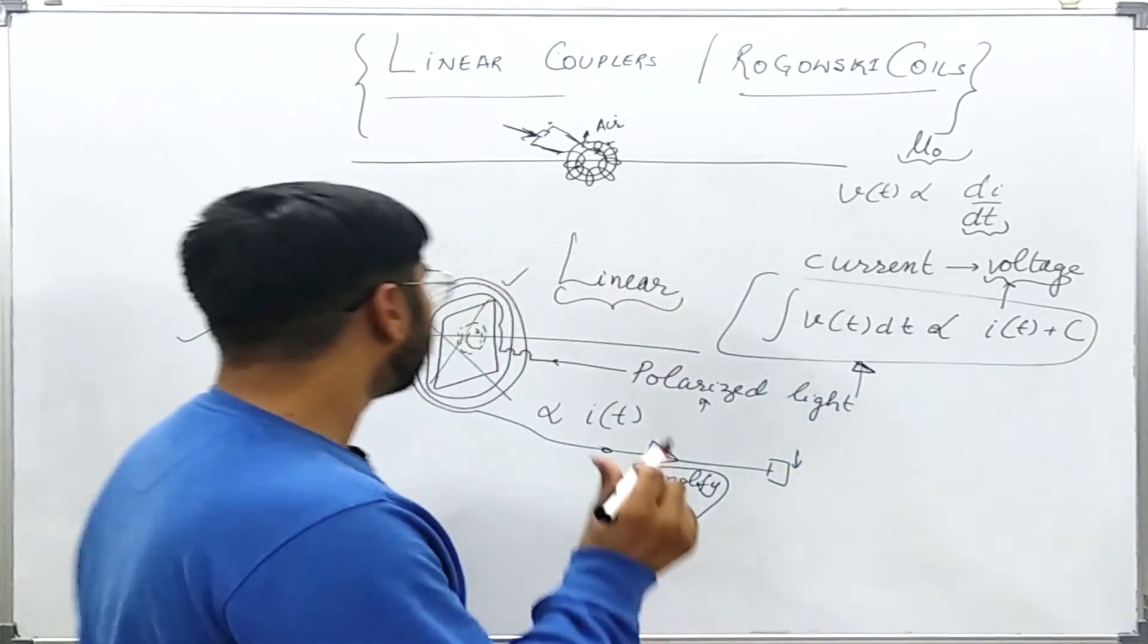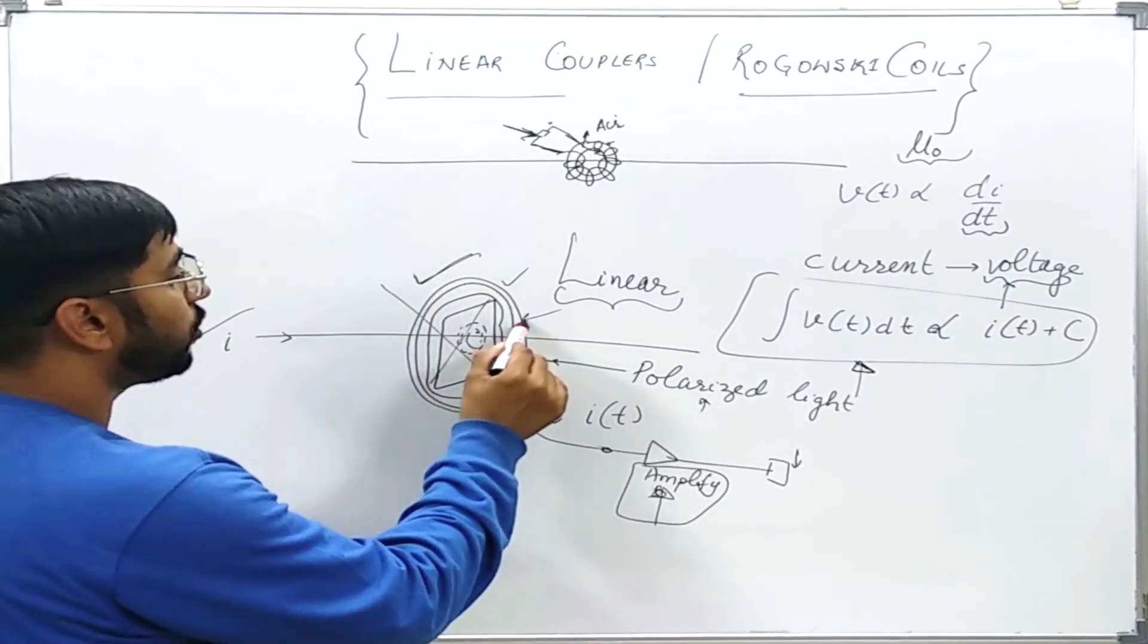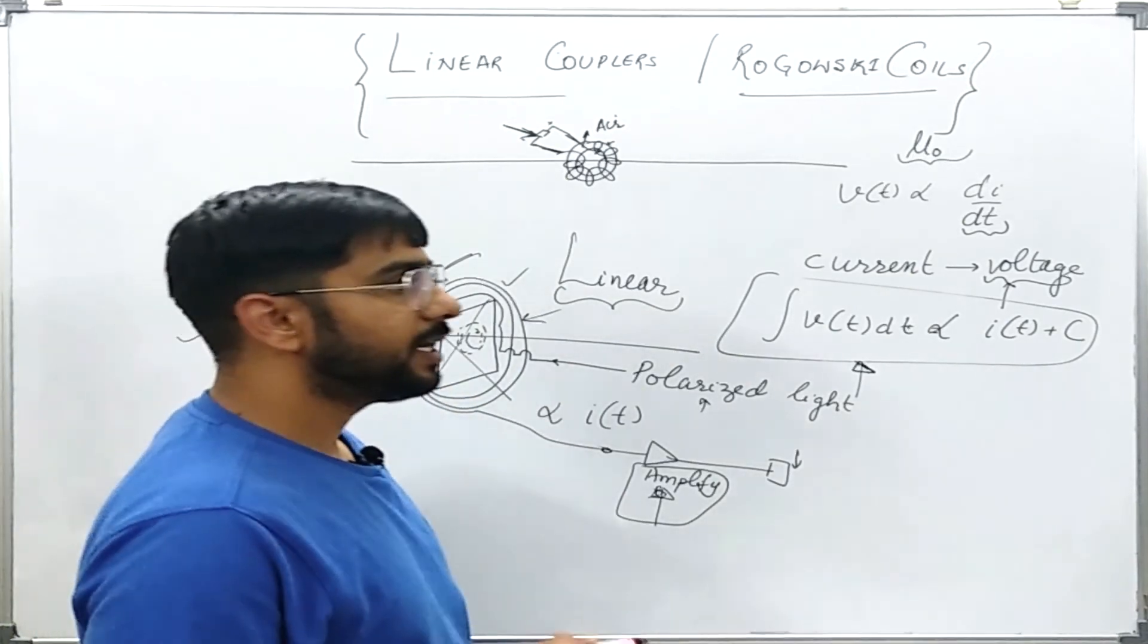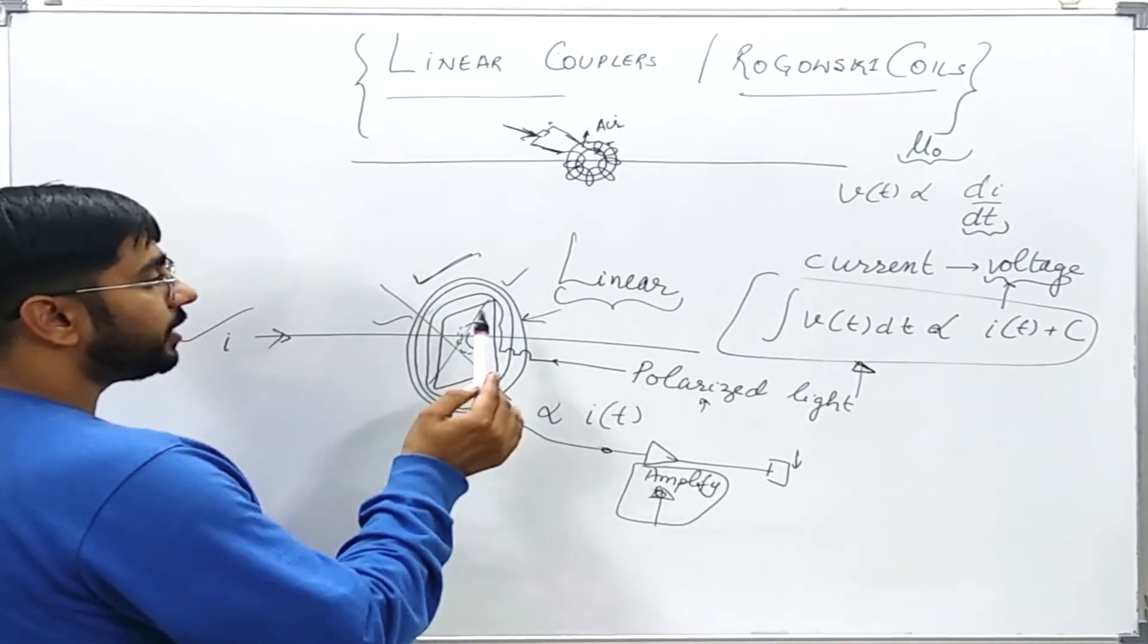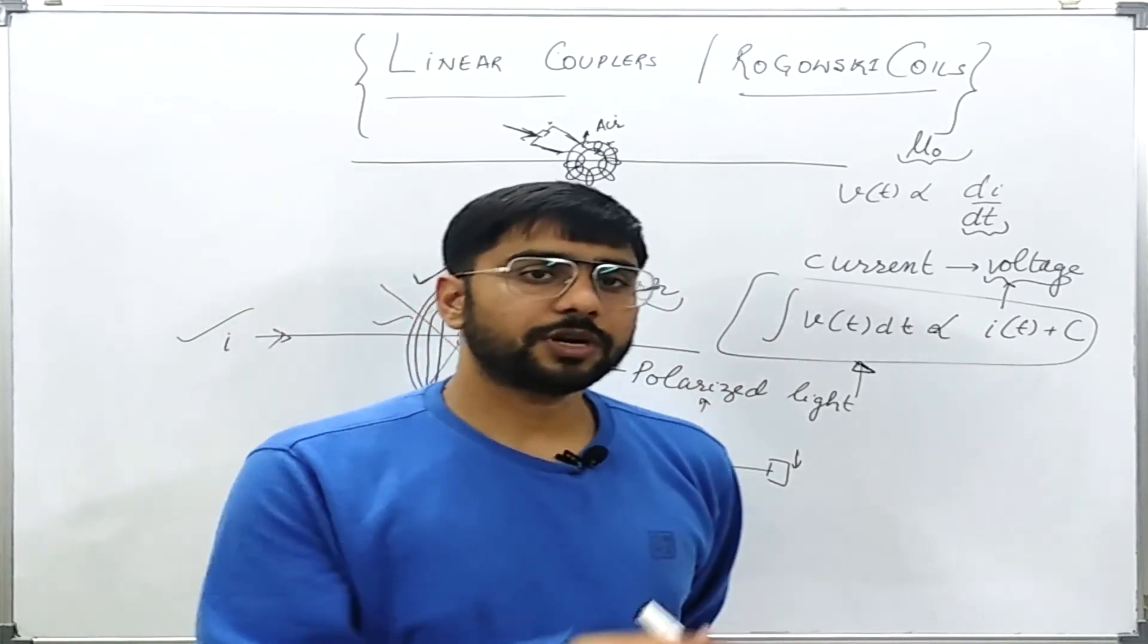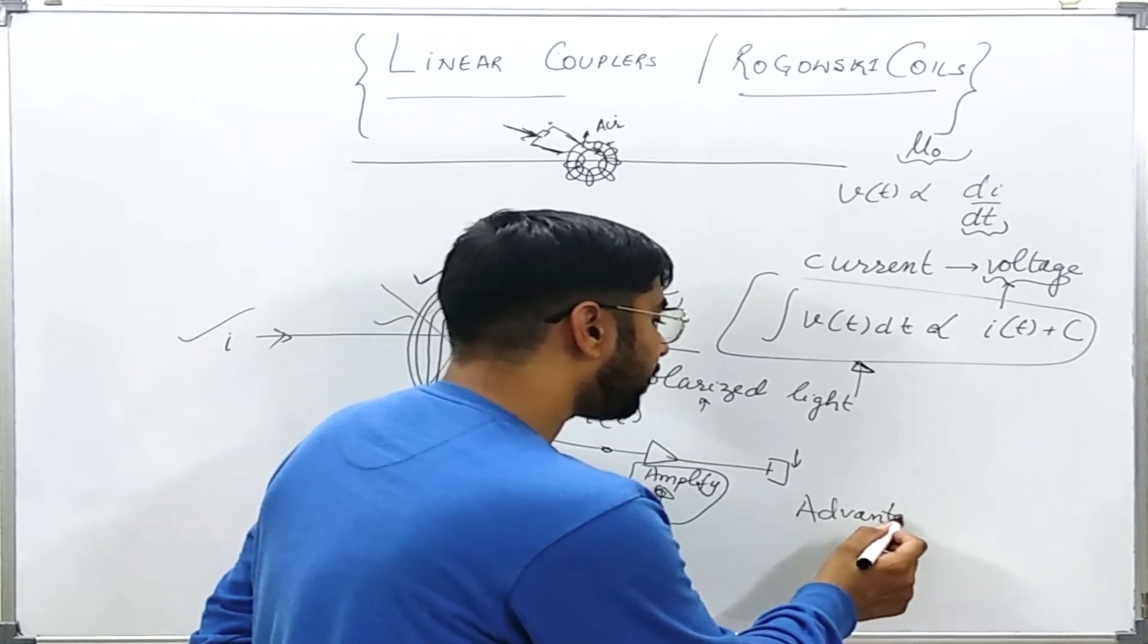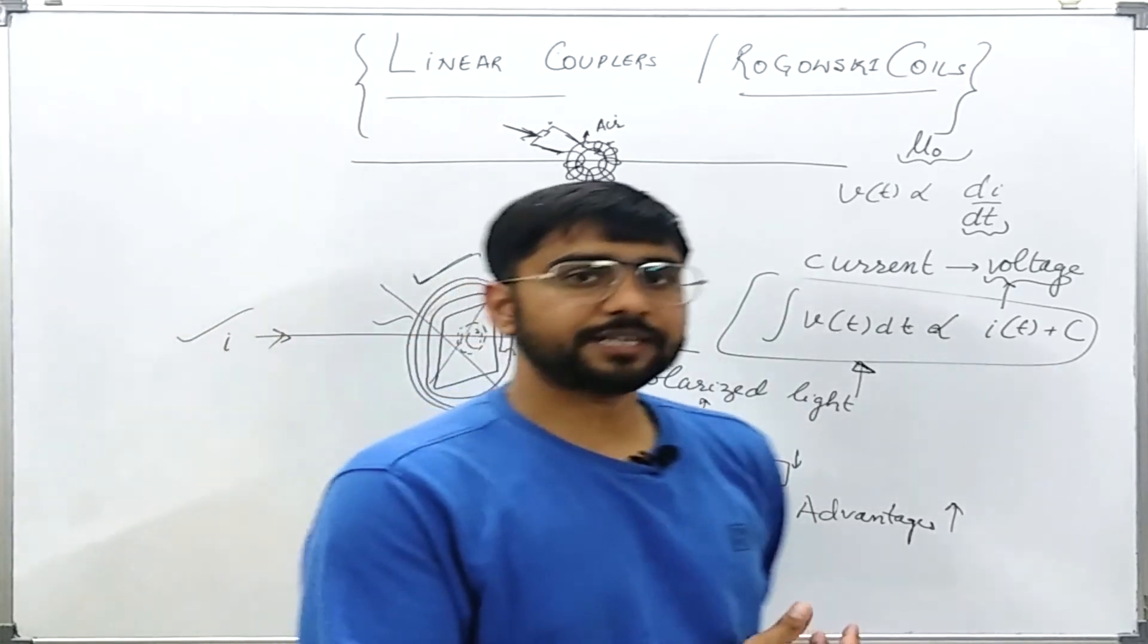If we see that this thing is going to save some cost in terms of let us say insulation level and all those things, because this is not going to require that much insulation also. If the voltage level is not that much high, it is not going to have any magnetic material only. It is just an optical fiber block. If we see that the cost of the installation is lesser as compared to the normal current transformer, then we will find that the advantages of this technology are more than the disadvantages of this technology as compared to conventional current transformers.